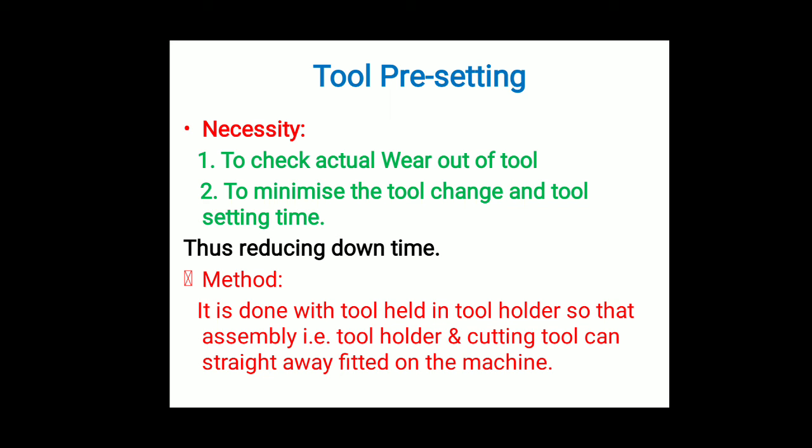The next part is tool pre-setting. Tool pre-setting means before starting manufacturing we fix our tool at the desired or required position. The necessity for tool pre-setting is to check the actual wear of the tool — after how many hours or working days the tool will wear out — and to minimize the tool change and tool setting time, reducing downtime.